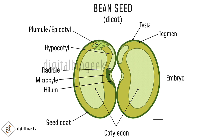There is a scar on the seed coat through which the developing seed is attached to the fruit, known as the hilum. Above the hilum there is a small pore called the micropyle, whose main function is to serve as the entry point for pollen tubes during fertilization. Within the seed coat, the embryo consists of an embryonic axis and one or two cotyledons — these cotyledons are fleshy and have food reserves for the developing embryo. At the two ends of the embryonic axis is the radicle, which gives rise to the root system, and the plumule, which gives rise to the shoot system.